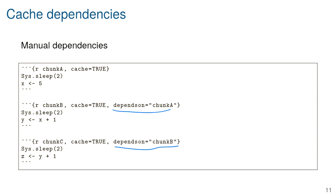If a code chunk takes less than a second, you probably don't want to cache it — only cache things that take enough time that waiting is painful. A fake example uses `Sys.sleep(2)` to put R to sleep for two seconds, which makes it possible to watch what's happening when running the R Markdown document.